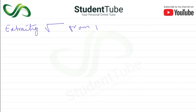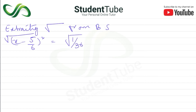Extracting the square root from both sides: x minus 5 upon 6 equals plus or minus 1 upon 6, because the square root of 36 is 6.